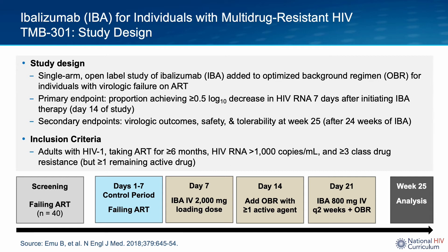Looking at the study design and phases: first there was screening and enrollment of individuals whose ART regimen was failing — generally with a lot of treatment experience and multi-class drug resistance. All participants had a control period in which they continued their failing regimen. Then at day seven, an ibalizumab loading dose was administered while the failing entry regimen was continued. At day 14, the failing regimen was replaced with the optimized background regimen containing at least one active agent, and ibalizumab was continued every two weeks at the specified dose throughout the maintenance phase.